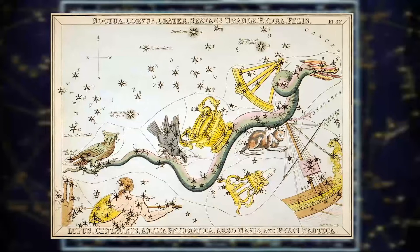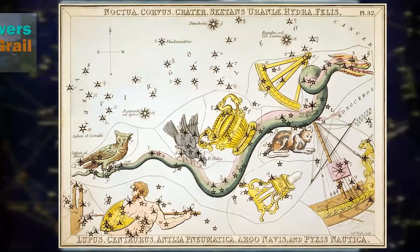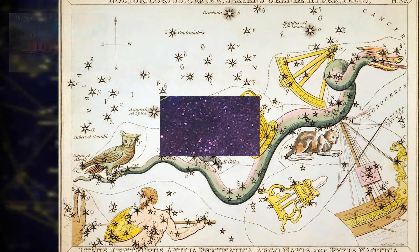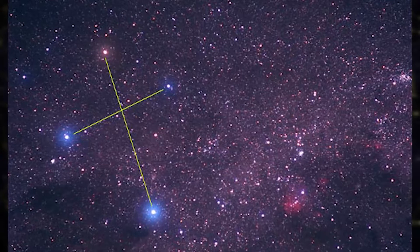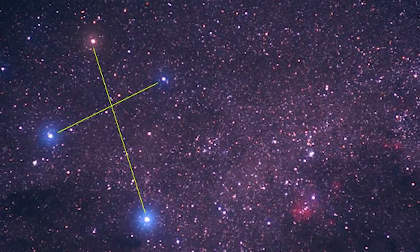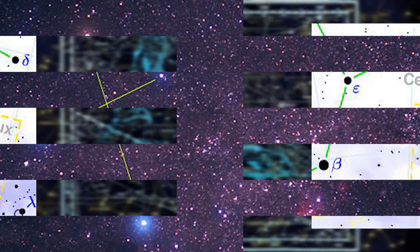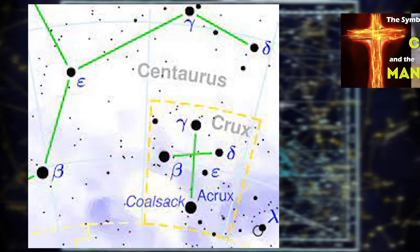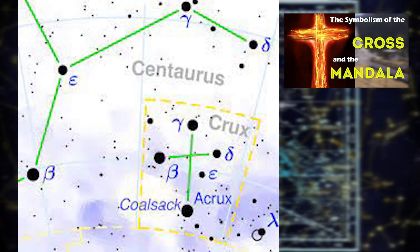Crater, the Cup. Crater's name is the Latinisation of the Greek krater. We have a video in the playlist entitled The Symbolism of Rivers and Streams, the Chalice, the Cup and the Holy Grail. Crux or Crucis — the Cross. The Crux is a constellation of the southern sky centred on four bright stars in a cross-shaped asterism commonly known as the Southern Cross. It is not a Ptolemaic constellation but was described in the 1603 Uranometria. We have a video in the playlist called The Symbolism of the Cross and the Mandala.